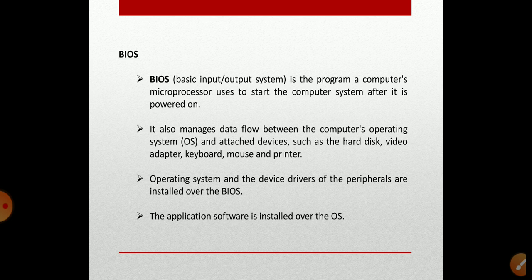The main function of BIOS is to identify, configure, test, and connect the computer hardware to the operating system immediately after the computer is turned on. When we turn on a computer, BIOS acts as an intermediate between the operating system and the hardware. BIOS must be present in the system so that we can install an operating system. By now you should be familiar with the most fundamental terms of a computer — both hardware and software. We shall see you in the next class. Thank you.